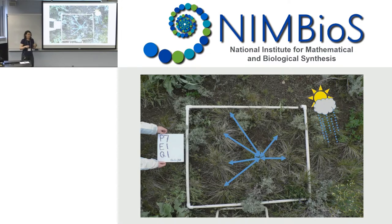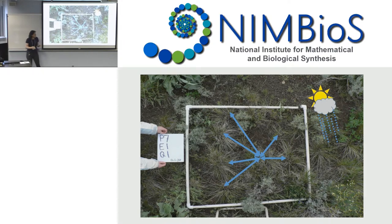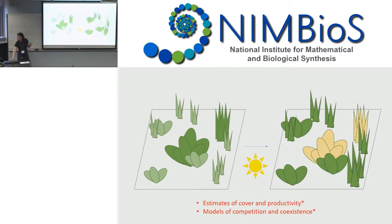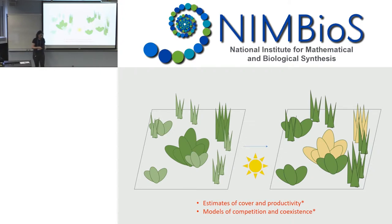We put together some very intense statistical methods that we published last year, and they turn out to have mediocre to minor predictive success. These things matter: if we have a good year and assume that everyone grows, our estimates of cover and productivity are increased. But if we make those assumptions about every individual in that plot and we're wrong, we might be misestimating cover and productivity, and we may be incorrect about our models of competition and coexistence.